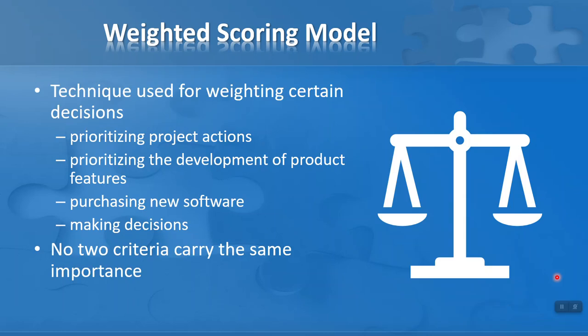What is the weighted scoring model? It's a technique we use for weighting certain decisions, such as prioritizing project actions, developing new product features, purchasing new software, or making any decision in general. We know that no two criteria carry the same importance, so some things are more important than others. Therefore, we might need to add weightings to the more important ones and less weightings to the less important ones. That will help us make a more informed decision.